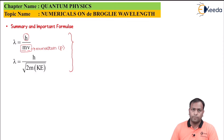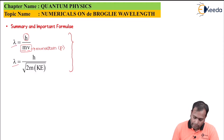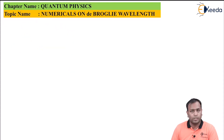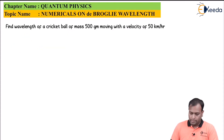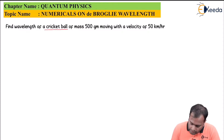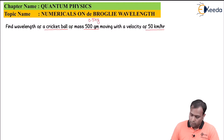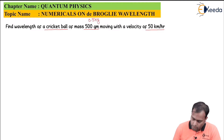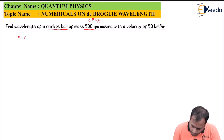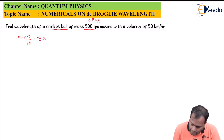The questions here will majorly involve finding the de Broglie wavelength. First question: find the wavelength of a cricket ball. The object is a cricket ball having a mass of 500 grams, which in SI units is 0.5 kg, moving at a velocity of 50 km per hour. Since this is not in SI units, we need to convert it to meters per second. The conversion is 50 km/h multiplied by 5 over 18, giving a velocity of 13.89 m/s.